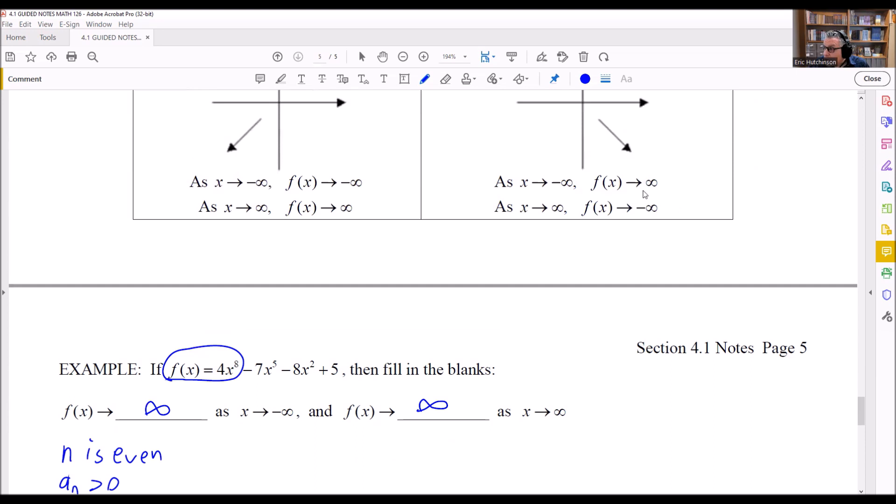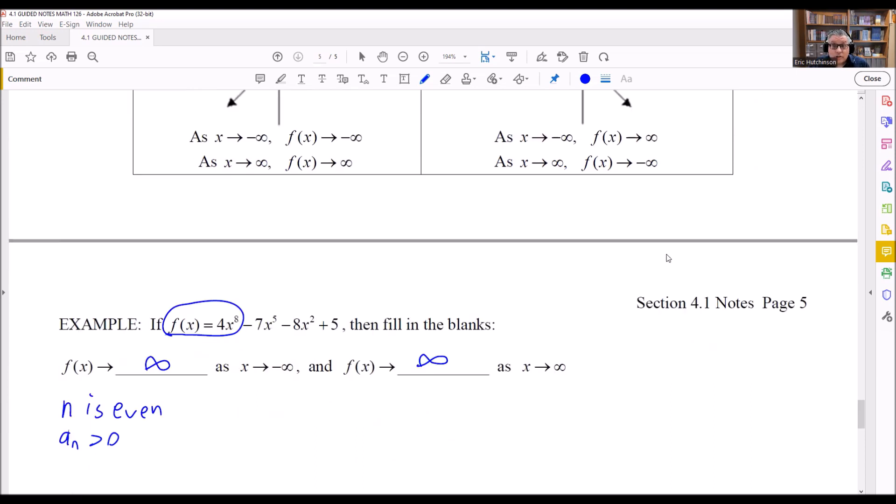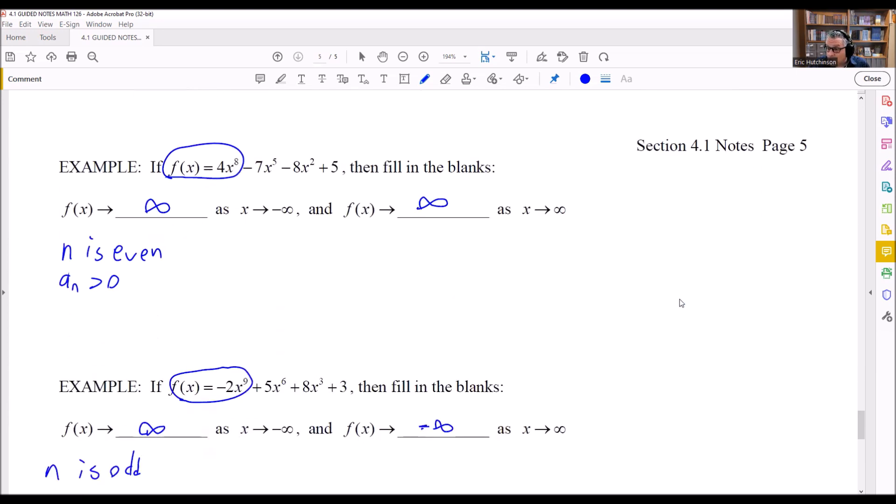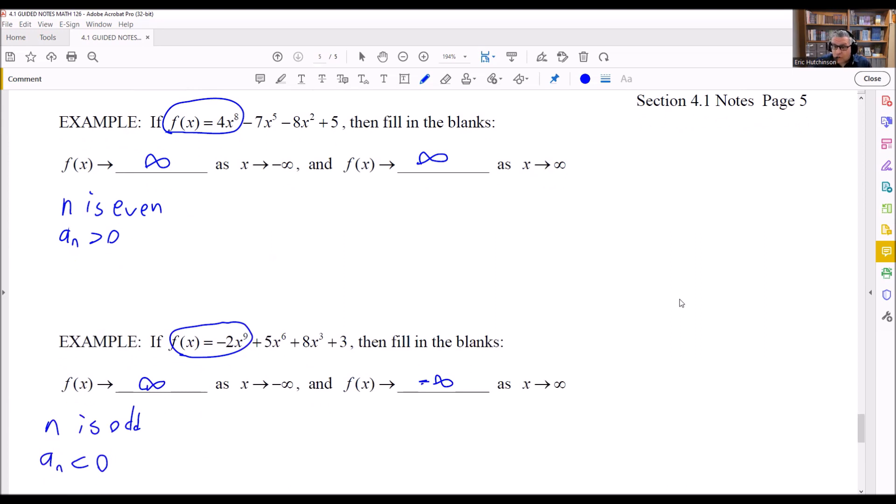Again, we're just taking the answers directly off of this chart, this table up here. That's how I'm filling in those particular values. These two problems are done just by looking at the end behavior models. In particular, you're looking at the algebraic description of those end behavior models in order to answer these questions.